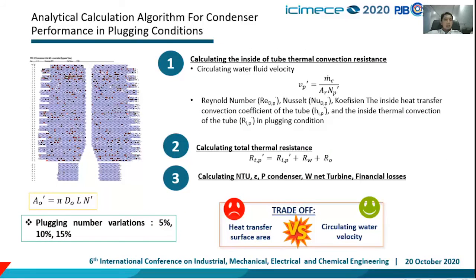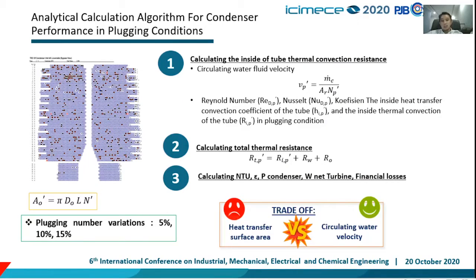Here is the analytical calculation algorithm for condenser performance in plugging conditions. We use three plugging number variations: 5%, 10%, and 15%. On one hand, plugging conditions will reduce the heat transfer surface area, but on the other hand, plugging will increase circulating water velocity, which is beneficial for heat transfer. So we will study which effect is more significant to condenser performance.